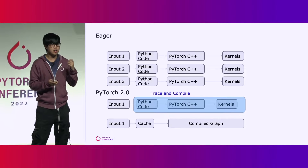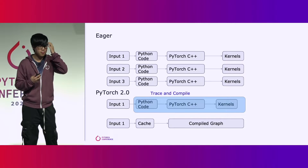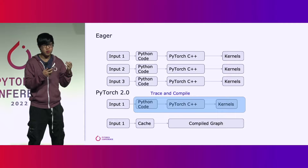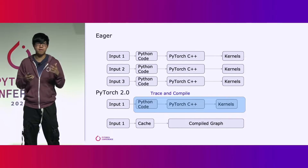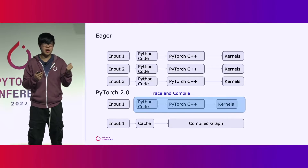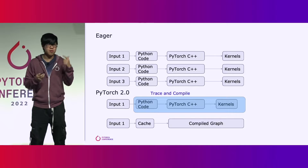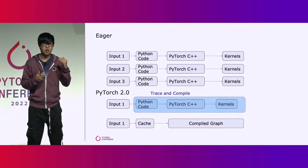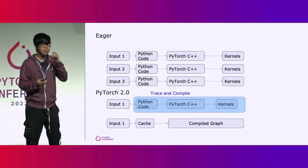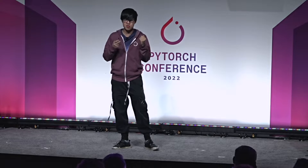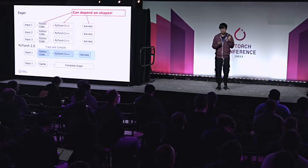With compilation, this execution flow becomes quite different. Upon the first input coming in, we capture all of this logic and create a compiled graph out of it. For the next input, we need to look up this graph, and if it's in the cache, we can jump directly to the compiled graph without needing to go through all of these steps again. This reuse of the graph and the static representation is what enables us to do these optimizations and gain performance. However, it also introduces a new challenge: all of these components — the Python code, the C++ code, and the kernels — can all depend upon the shapes.